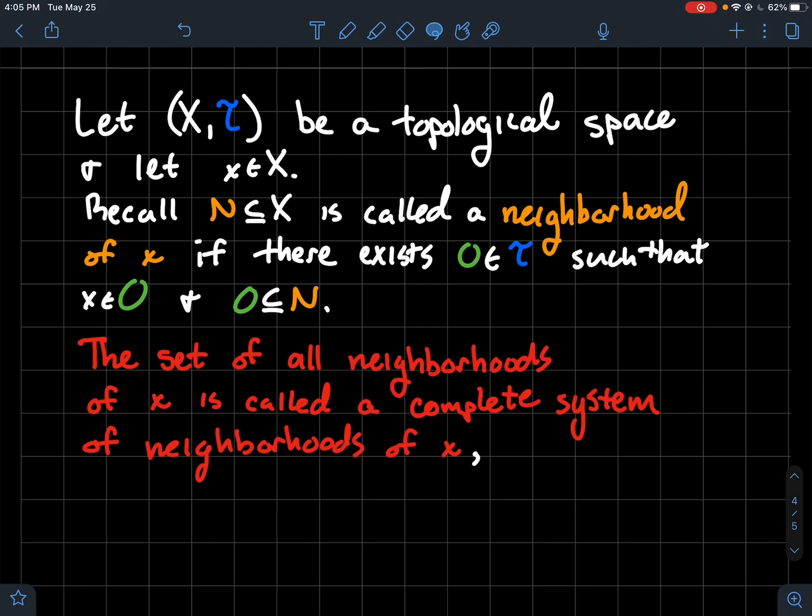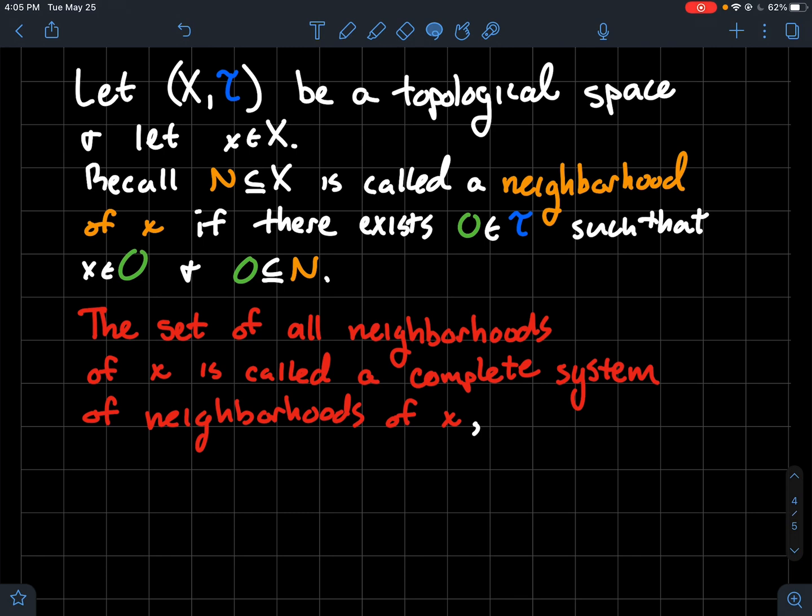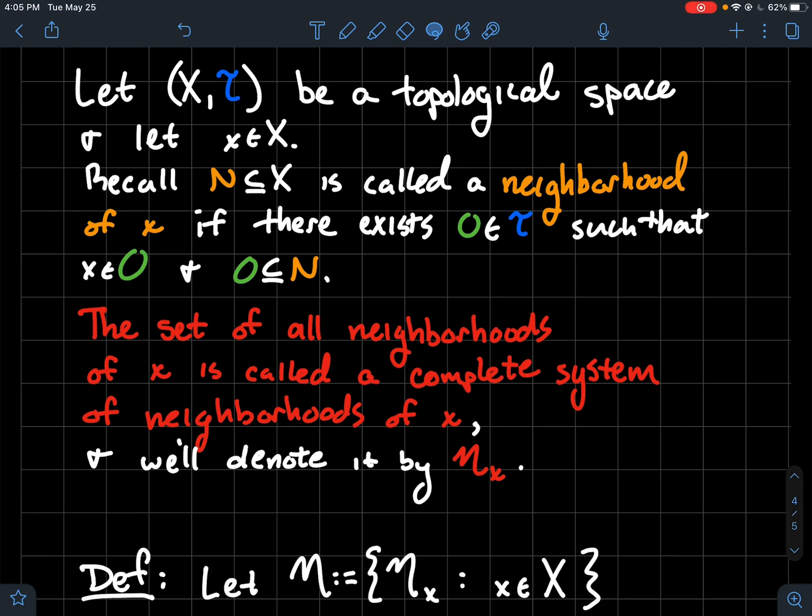And then another thing that we've defined so far is the set of all neighborhoods of x is called the complete system of neighborhoods of x. And the notation that I'm going to use is this fancy N, kind of looks like an eta, this fancy N sub x. And again the subscript x just indicates we're talking about neighborhoods of that point. So if we're talking about neighborhoods of two, you'd see a two down there on the real line.